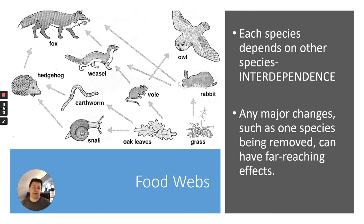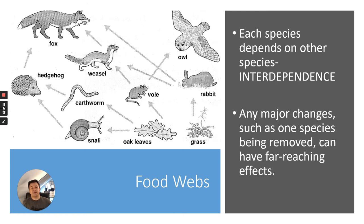As I said, food chains are quite simplified, so we use food webs. This is a food web in a woodland — you can see there are many different species, and even this food web is not complete; there'll be many more organisms in a real woodland. The key thing is that each species depends on other species for their survival — this is known as interdependence. Any major changes in the population of one species, whether through disease, extinction, or climatic change, can have far-reaching effects.